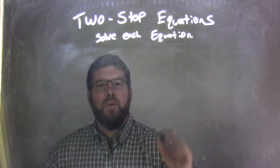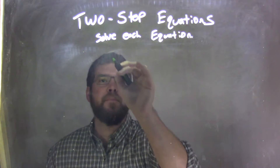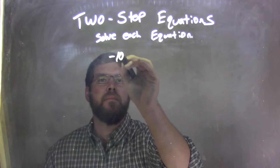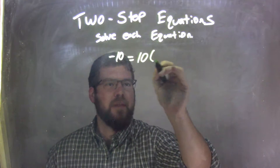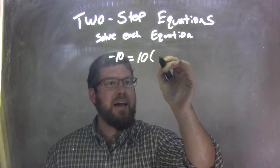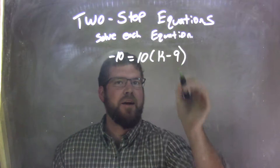If I was given this equation here: negative 10 equals 10 times the quantity k minus 9.